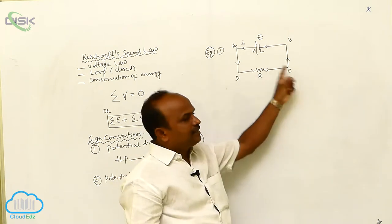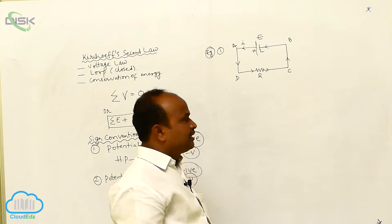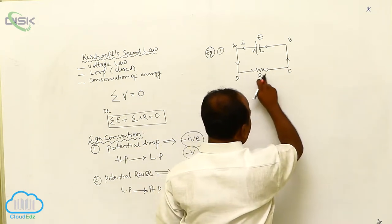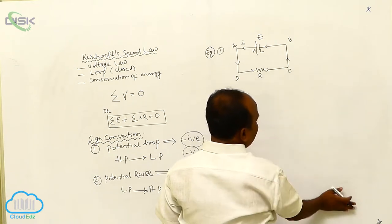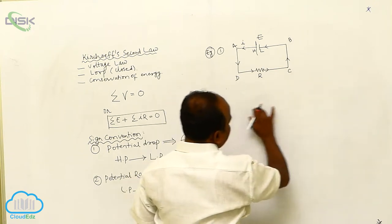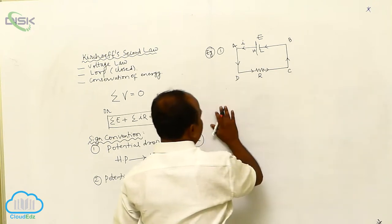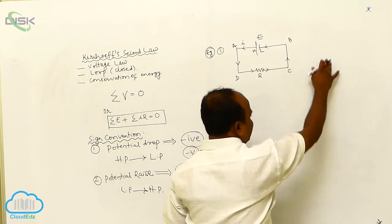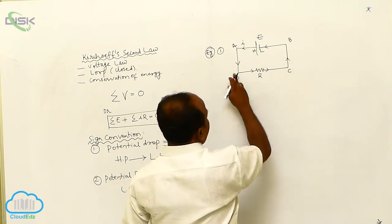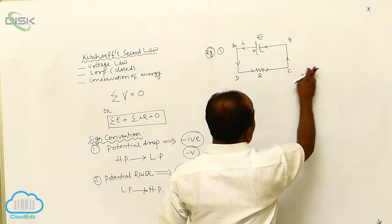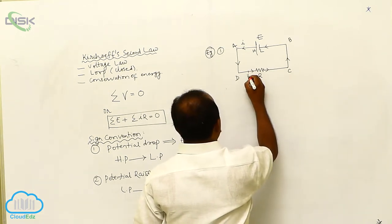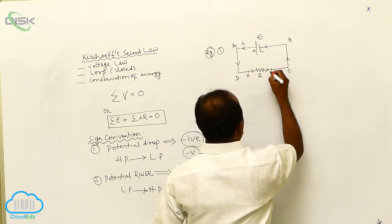Now see the current direction — current is traveling from higher potential to lower potential. If the current is traveling in a given direction, the leftward point is called the higher potential and the rightward point is called the lower potential. Current direction is left to right.